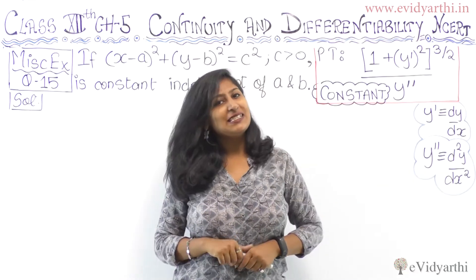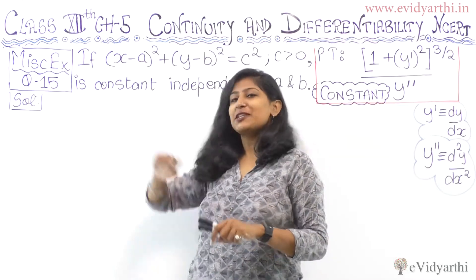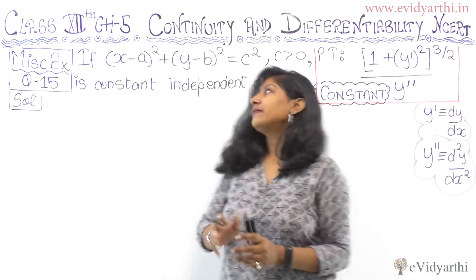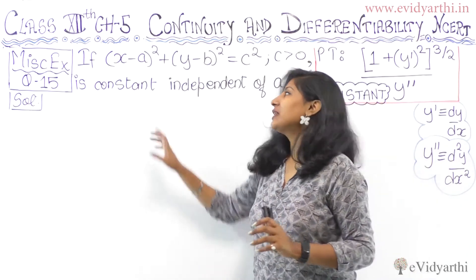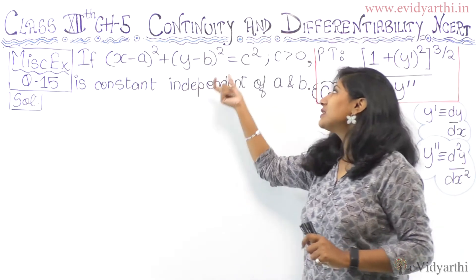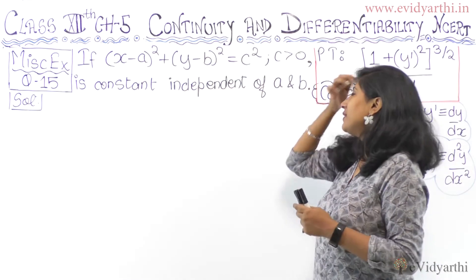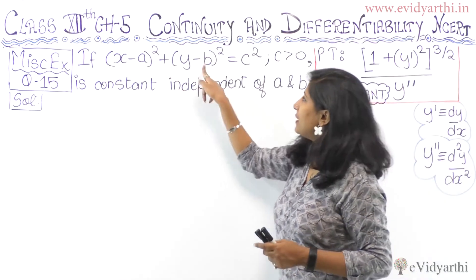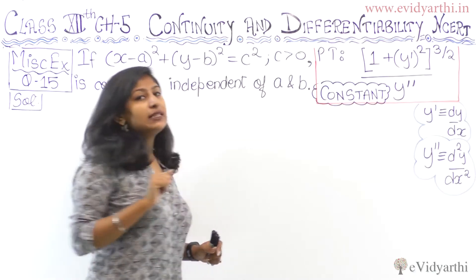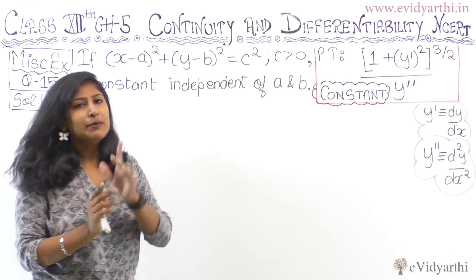Hi everyone, this is Avanchi Bhatia from kvr3.in and now we are going to talk about question number 15, exercise chapter number 5. A very interesting question: if (x minus a) whole square plus (y minus b) whole square is equal to c square, where a, b, c are constants greater than 0, we use this equation to show one thing.